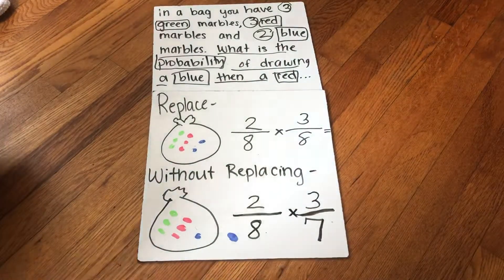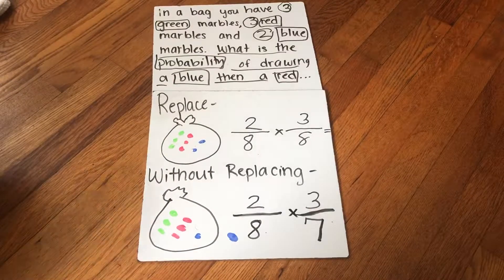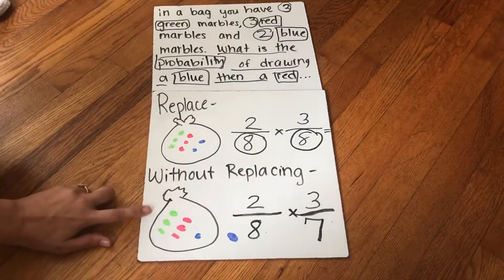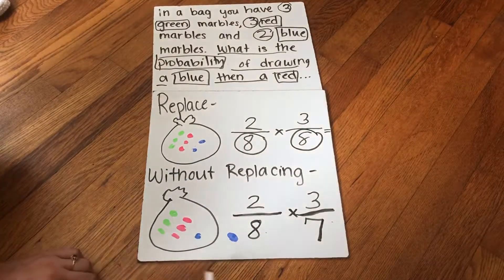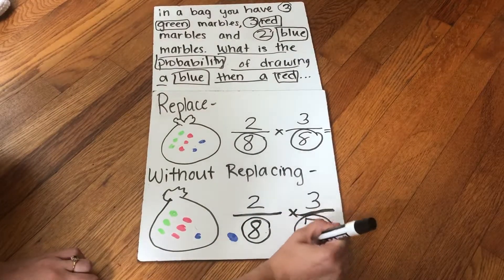So when you replace, the denominators stay the same. I have eight and I still have eight. When you don't replace, the denominator changes. So I had eight, I took one out. So then I had seven.